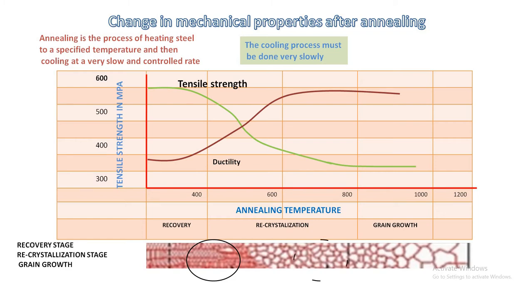The second stage is the recrystallization stage. Heating the material above its recrystallization temperature but below its melting point causes new grains to form without any residual stresses.